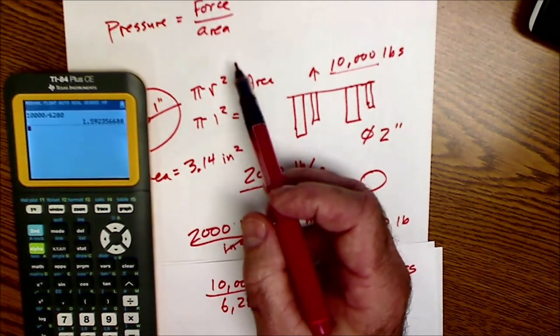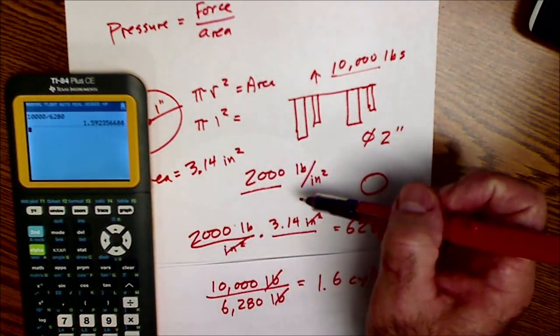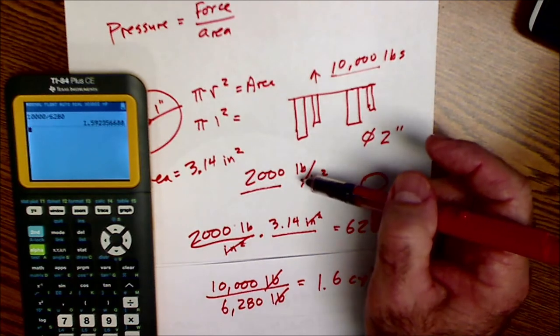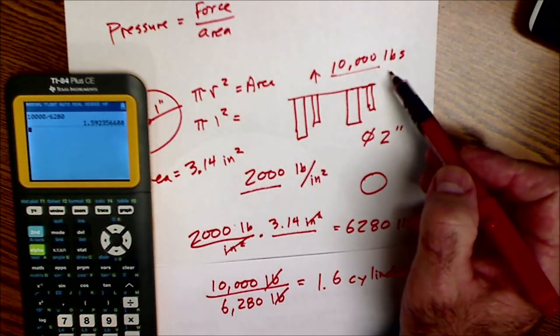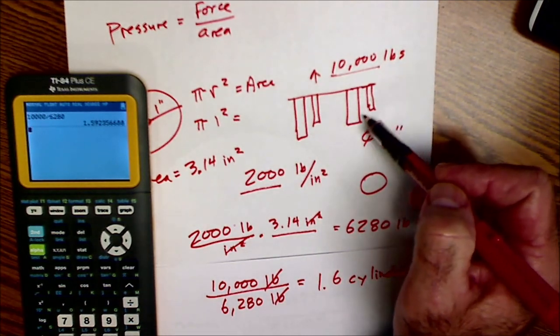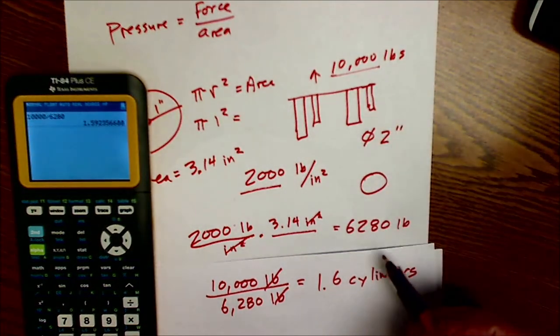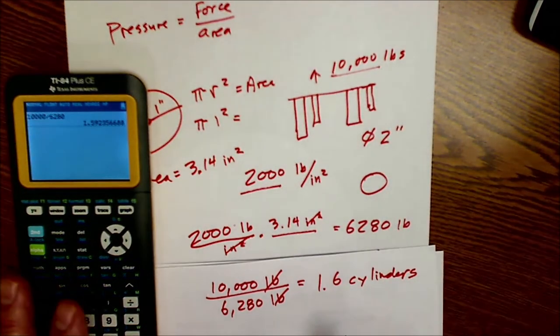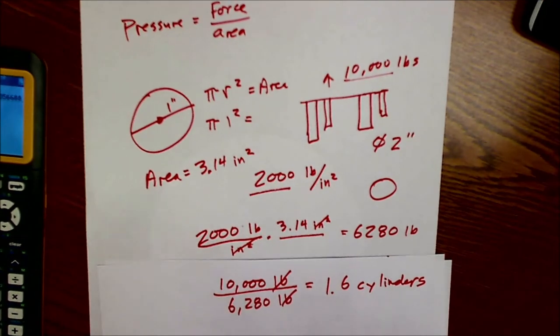So it's a pretty high pressure system, right, at 2,000 pounds per square inch. But you could see you could get whatever pounds you want by just adding more and more cylinders because it's going to give you more and more capacity. So there's an example problem of how hydraulics works.